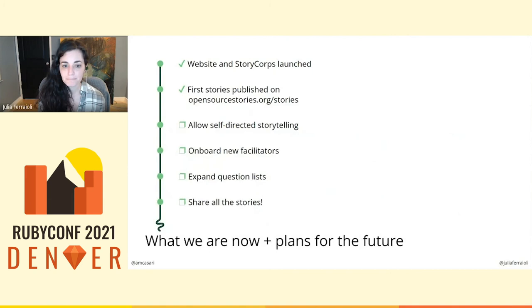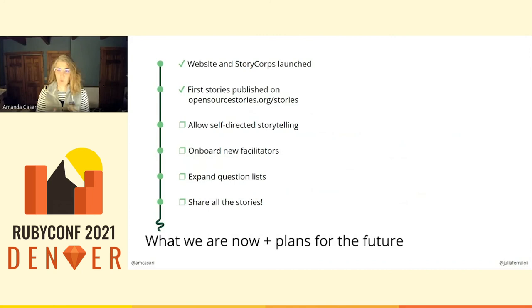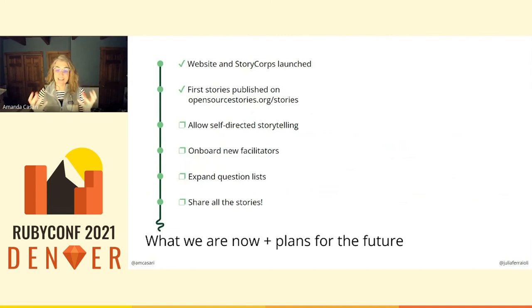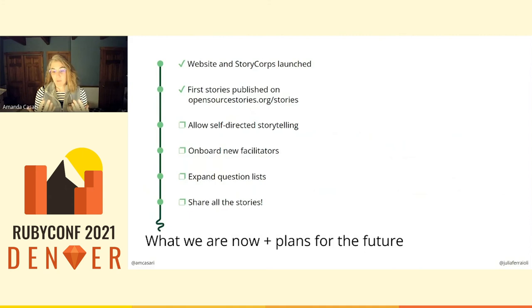As with any good project announcement, we want to share where we are now and where we want to be. There is a website, opensourcestories.org, which also has a component in StoryCorps — a nonprofit in the US trying to capture conversations, lived experiences, and narrative histories through shared experiences between two people. They have an app and a website, and most importantly, they take all of these experiences and conversations and archive them in the US Library of Congress. This makes it not just a story and a narrative, but documented history. Julia and I hope that this doesn't just become a project that lives in the ephemeral, but becomes the recorded history of so many people who currently are not being the center of the story.